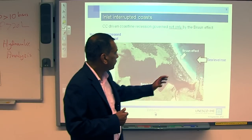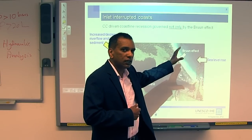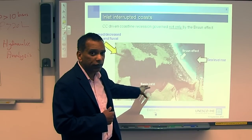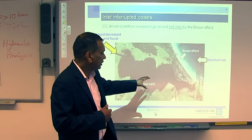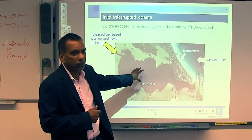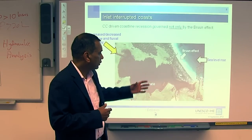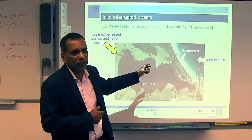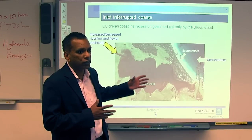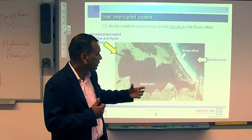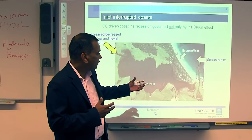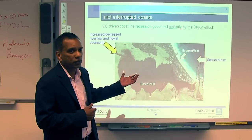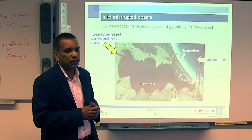Because of sea level rise, the Bruun effect that operates on open coastlines is still active here. But in addition, because of the basin, we also have another effect called basin infilling. When the sea level goes up on the ocean side, the sea level also goes up on the estuary side. As a result, the volume of water in the estuary increases, but the system always tries to retain its pre-climate change equilibrium. To compensate for this increased volume of water, it gets sand from the ocean side — meaning from the coastline — to raise its bed level so the volume remains the same. That's known as the basin infilling effect.